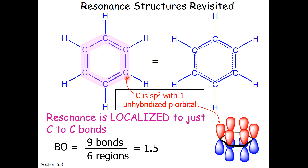The next part of this lecture deals with hybridization. When you finish with hybridization, come back and take a look at this, and you'll realize that each carbon has one unhybridized p-orbital, and the combination of these p-orbitals describes the electron cloud for the six electrons in those pi bonds.